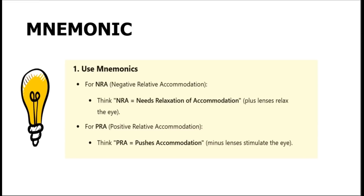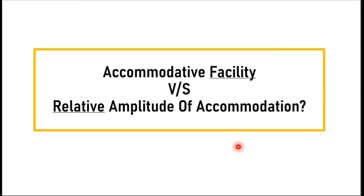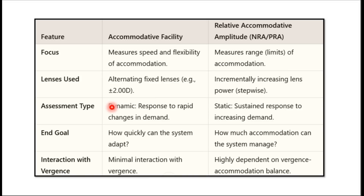A useful mnemonic: NRA — the patient 'Needs Relaxation of Accommodation,' so we relax accommodation using plus lenses. PRA — 'Pushes accommodation,' so we use minus lenses to stimulate it. To summarize the difference from accommodative facility: in accommodative facility we measure the speed and flexibility of accommodation, whereas in relative amplitude of accommodation we measure the limits — how much the patient can relax and how much they can stimulate accommodation to maintain binocular single vision.